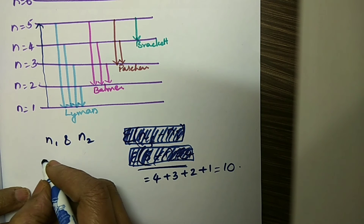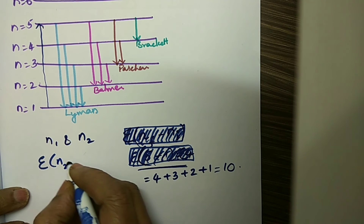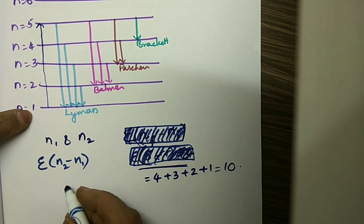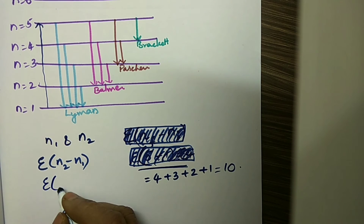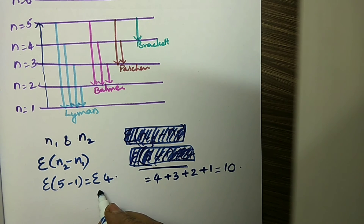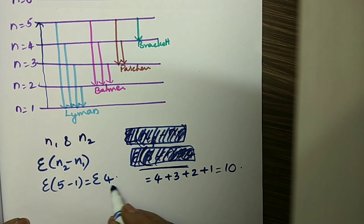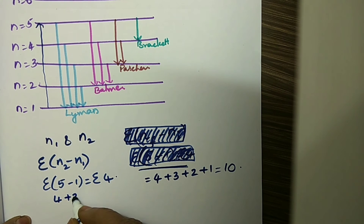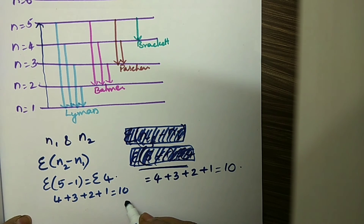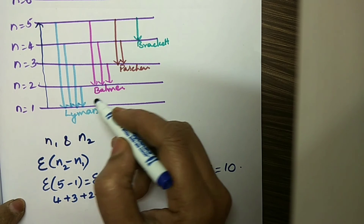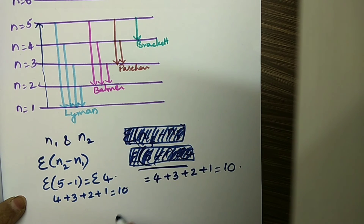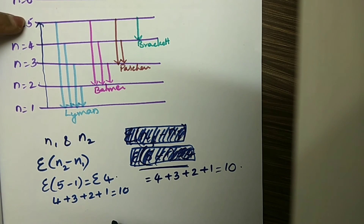The formula is sigma of (N2 minus N1). Here we are considering the 5th and 1st orbits, so sigma of (5 minus 1) equals sigma 4, which means adding 4 plus 3 plus 2 plus 1 — totally 10 spectral lines. You can see: 4 lines in the Lyman series, 3 lines in the Balmer, 2 in Paschen, and 1 in Brackett series — totally 10 lines when the electron comes from the 5th to the 1st orbit.